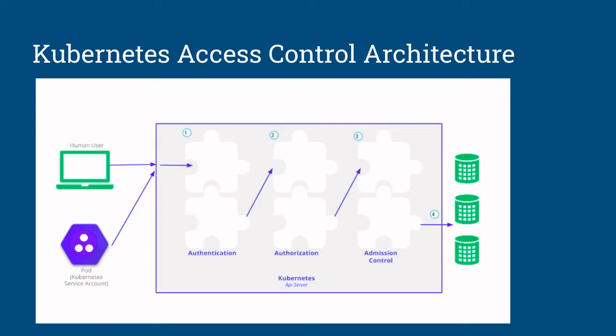The third module is admission control. It is essentially a kind of policy applied to cluster resources, based on which the request is either granted or denied access to those particular resources. This is the high-level architecture of how the request flows in the API server while it is being authenticated and authorized.